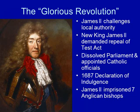Then we get to the Glorious Revolution. James II becomes the new king of England — the brother of Charles II. He challenges local authority, demands repeal of the Test Act, dissolves Parliament, and appoints Catholic officials. In 1687, he brings the Declaration of Indulgence back and imprisons seven Anglican bishops — all actions that deeply anger Protestants in England.